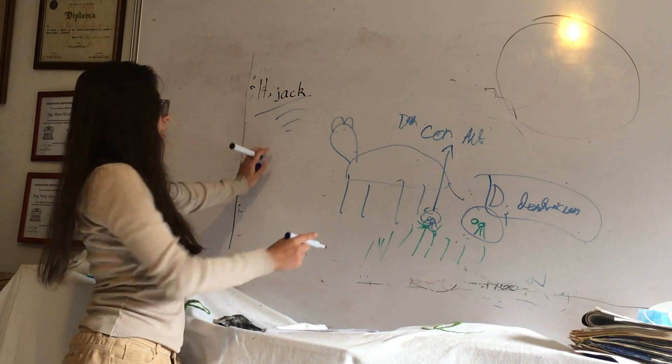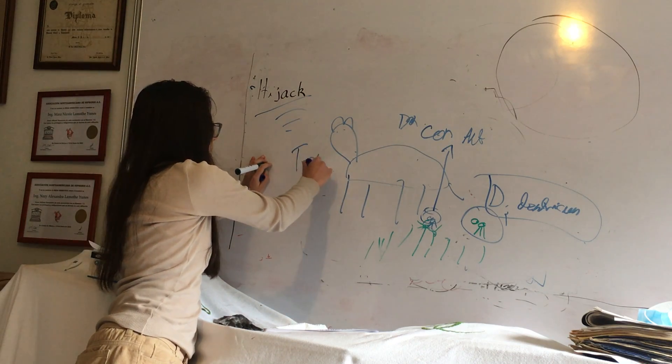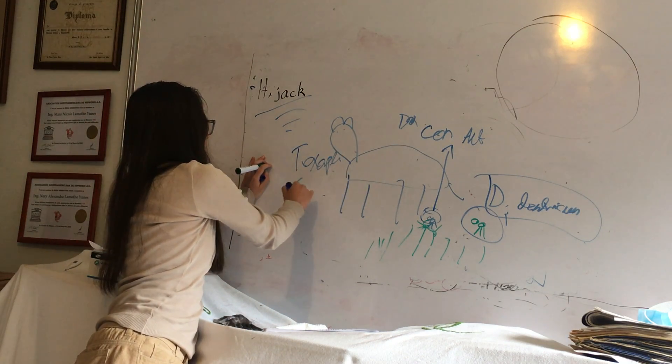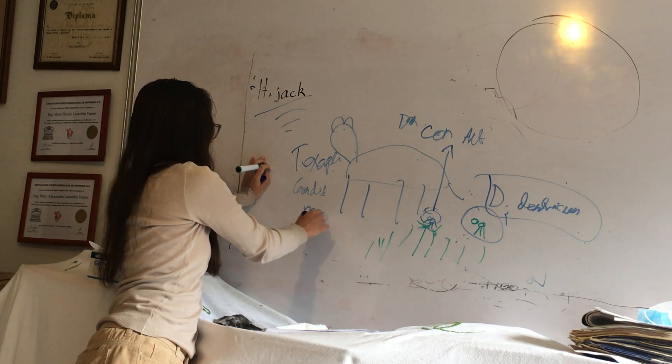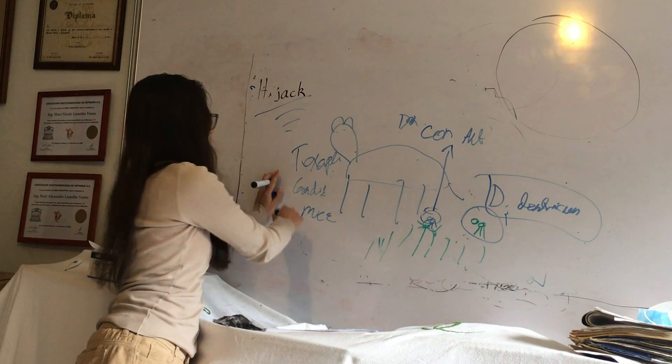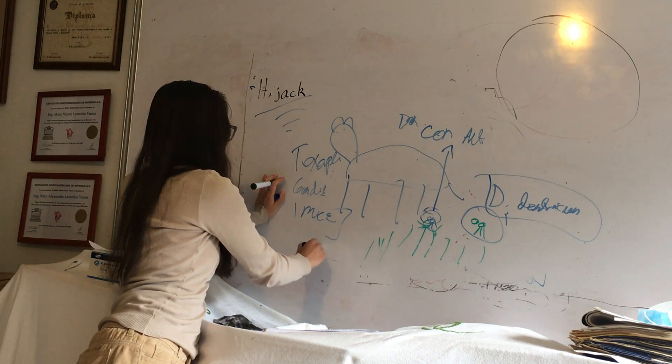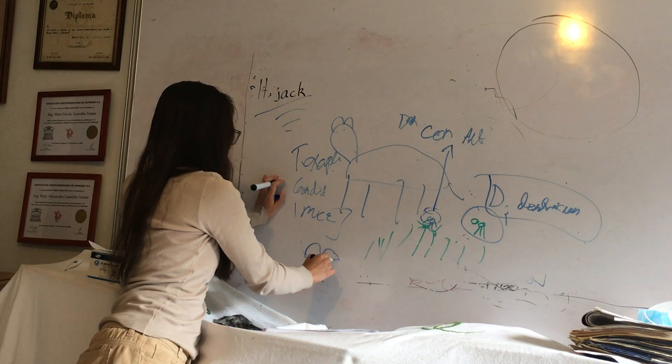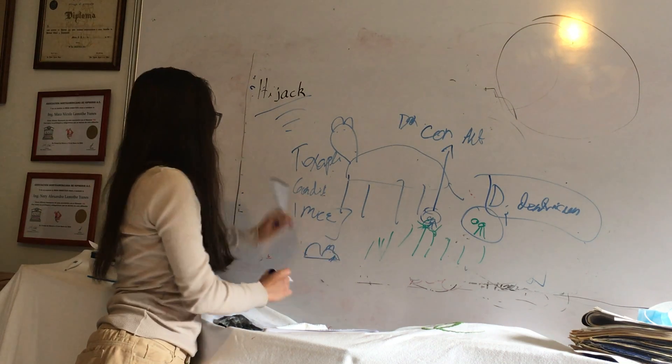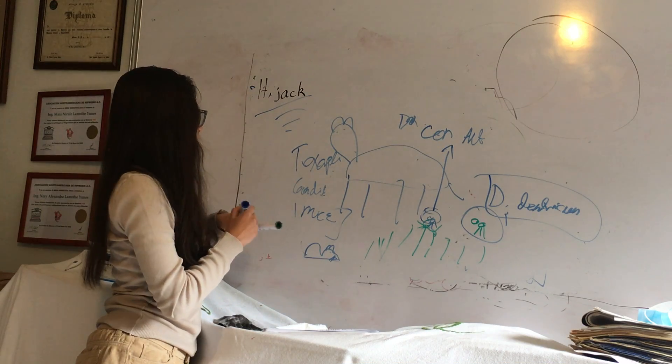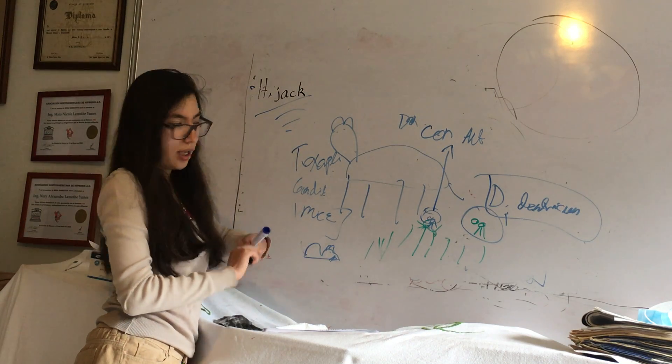There are many others, like Toxoplasma gondii, which is a parasite that infects the mice. And it destroys the amygdala. So if here we have mice, let's say it's a mouse, and it's infected with Toxoplasma gondii. Toxoplasma gondii destroys the amygdala.